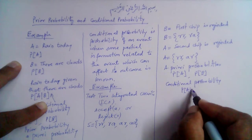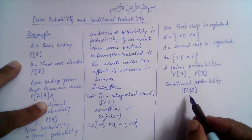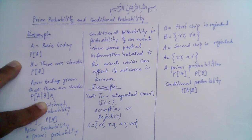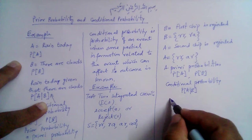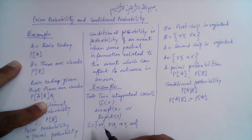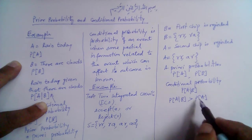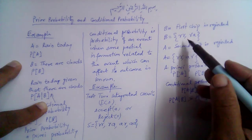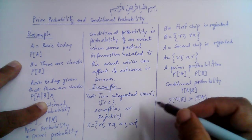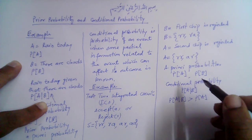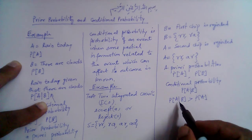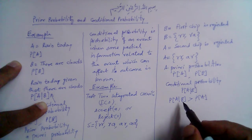So the conditional probability P(A|B) — the probability that the second chip is rejected given that the first chip has been rejected — will be different. It will usually be higher than the a priori probability. This is our a priori probability and this is our conditional probability. In this example we see that given partial information related to event A, it changes our thinking about finding the probability of that event.